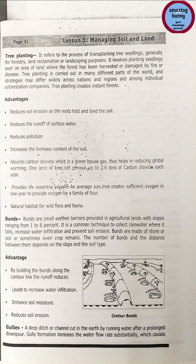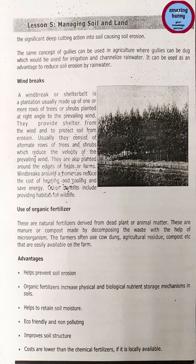Method 6 — Gullies: a gully is a deep ditch or channel cut in the earth by running water after prolonged downpour. Gully formation increases water flow rate substantially, causing significant deep cutting into soil and soil erosion. However, the same concept can be applied in agriculture: gullies can be dug to be used for irrigation and to channelize rain water, thereby reducing soil erosion by rain water.